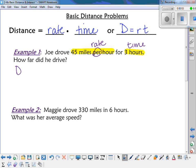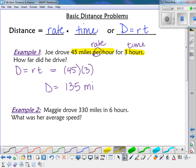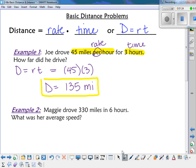So D equals RT. In this case they gave you the rate and the time, and the distance is what we're trying to find. So we just plug it in. The rate was 45 miles per hour, the time was three. So the distance that Joe drove would have been 135 miles. 45 times three is 135.